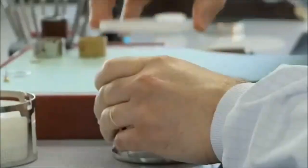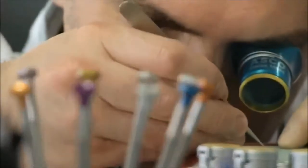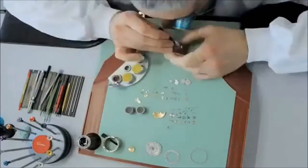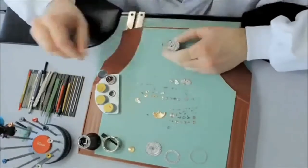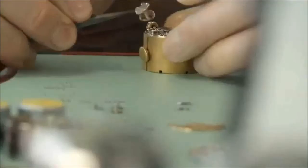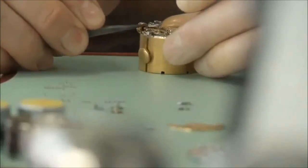In the workshop, the watchmaker begins to reassemble the movement. For a simple movement, this takes between 5 to 8 hours, and up to 20 hours for a grand complication. Each component must be replaced in a precise order.